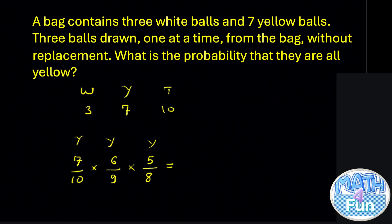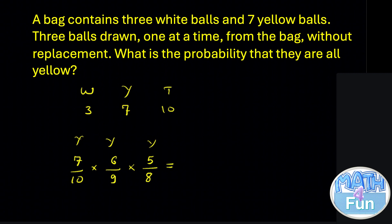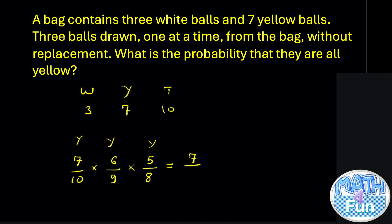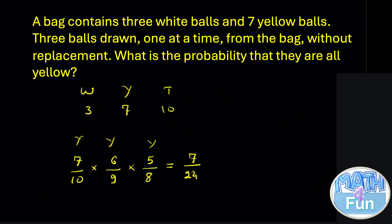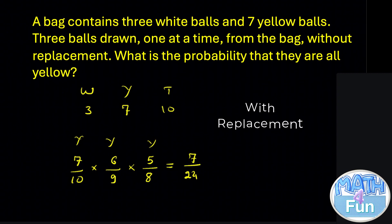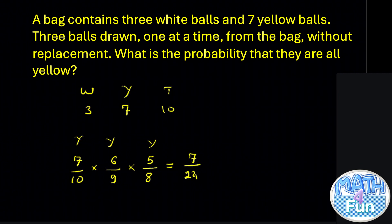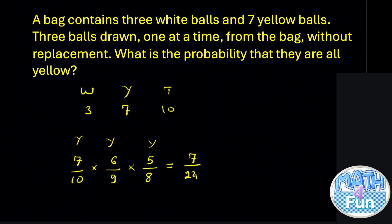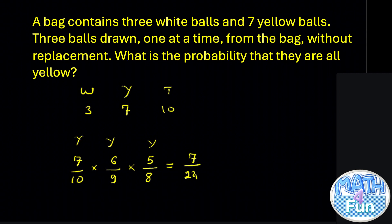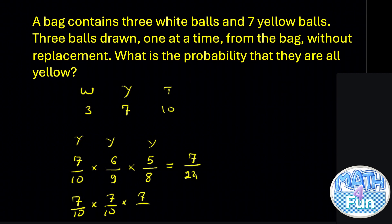We multiply those together: 7/10 × 6/9 × 5/8. Do it by calculator and you get 7 out of 24. Just to complete the idea — if they say with replacement, you return the ball to the box, so the total stays 10 and the yellow stays 7 each time. With replacement it becomes 7/10 × 7/10 × 7/10.